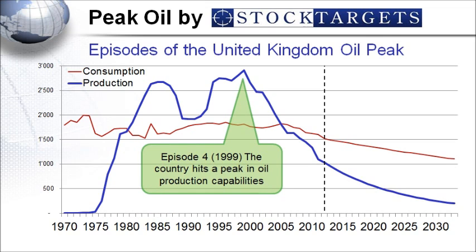Episode number four: the oil production hits a peak in 1999. Regardless of the oil reserves, the peak is reached the day the country is unable to any longer increase its production capacity. The peak happens automatically once your reserves start to be depleted — the pressure in the ground no longer allows the oil to come out easily. You have to start pumping more, drill more wells, and each new well drilled will produce or generate less oil.